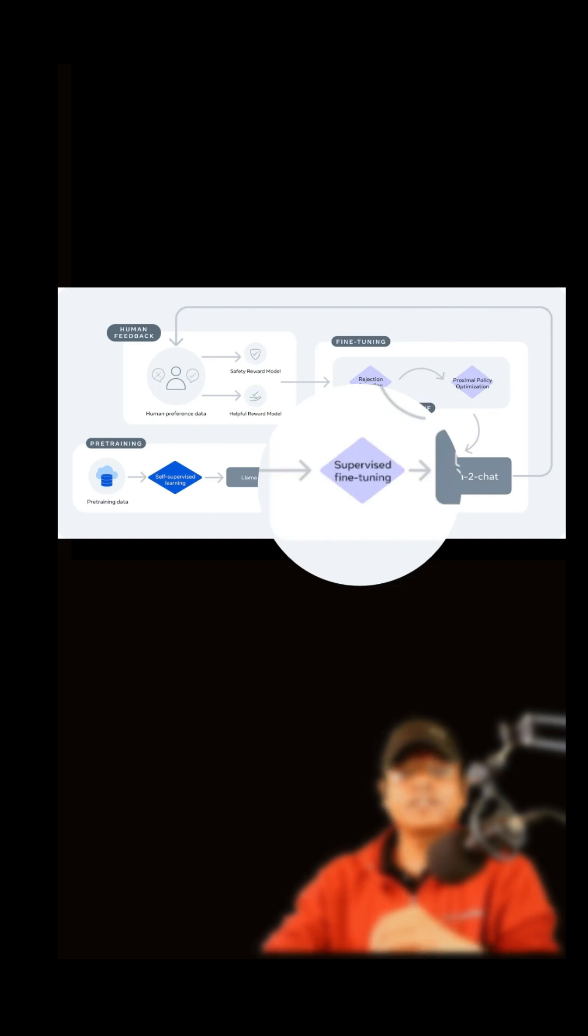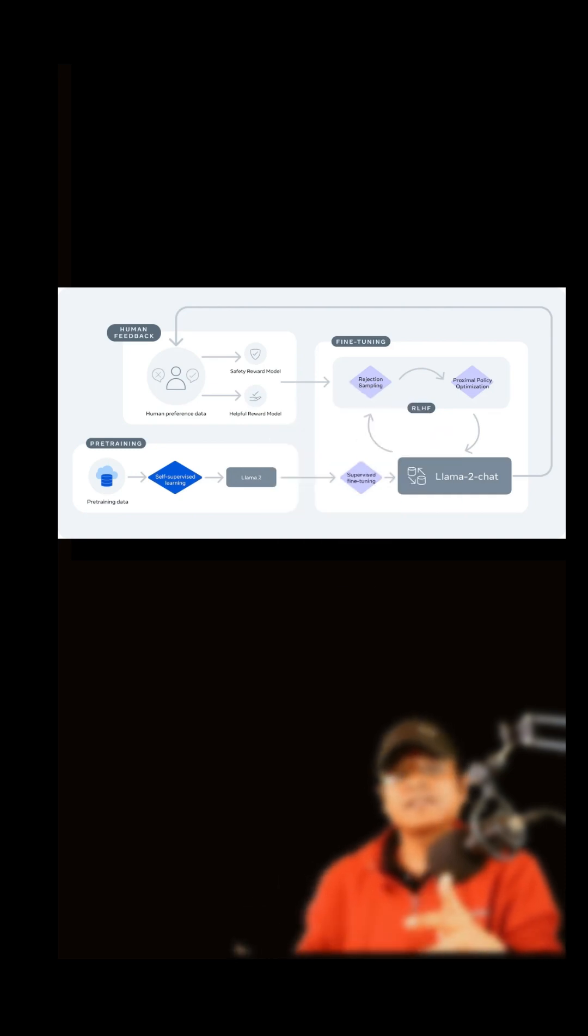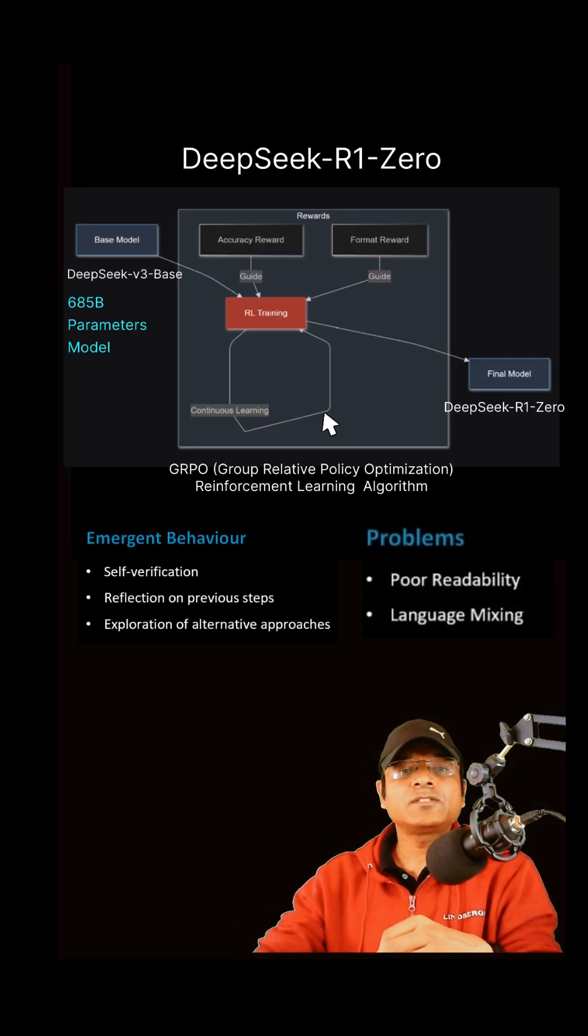Typically we need supervised fine-tuning on the pretrained model so that it's aligned with user preference and safety alignment, so the model can be consumed for general purposes. But they didn't apply supervised fine-tuning and they got the DeepSeek R1 model.